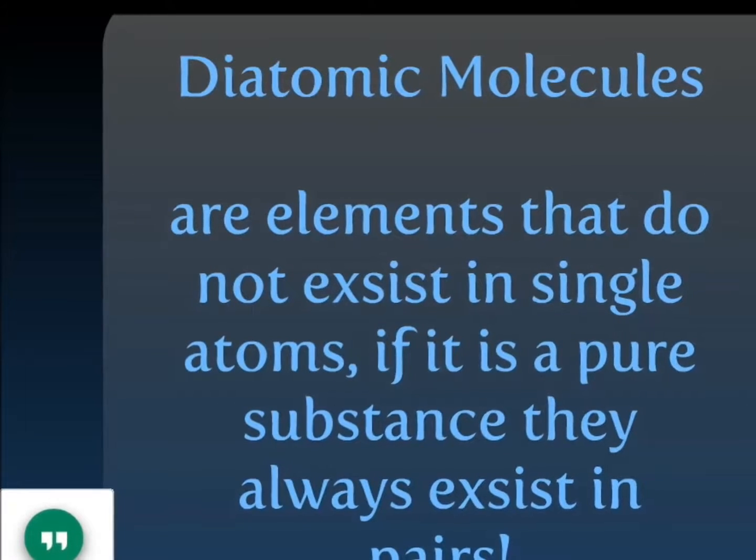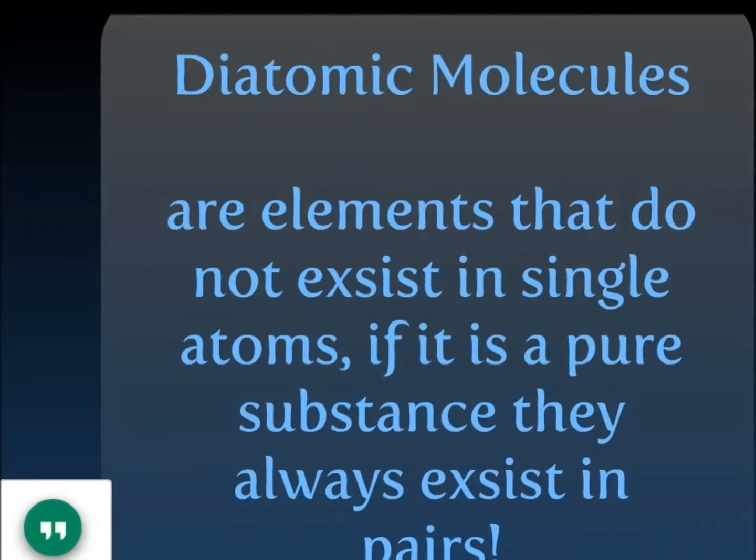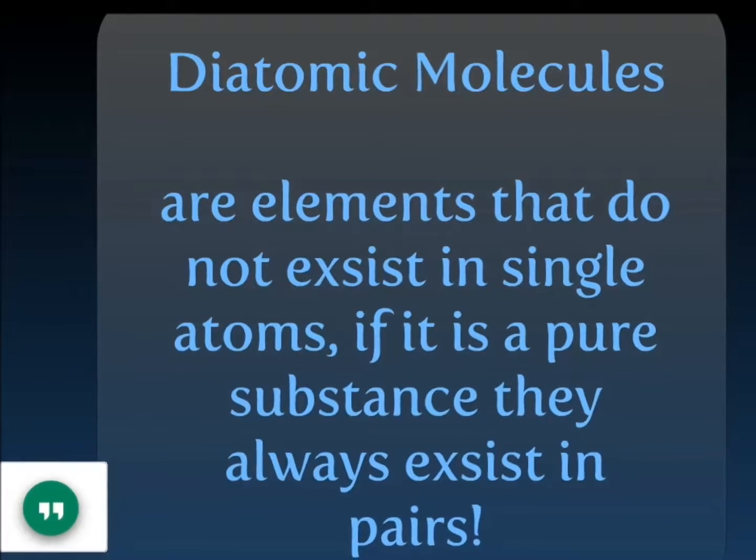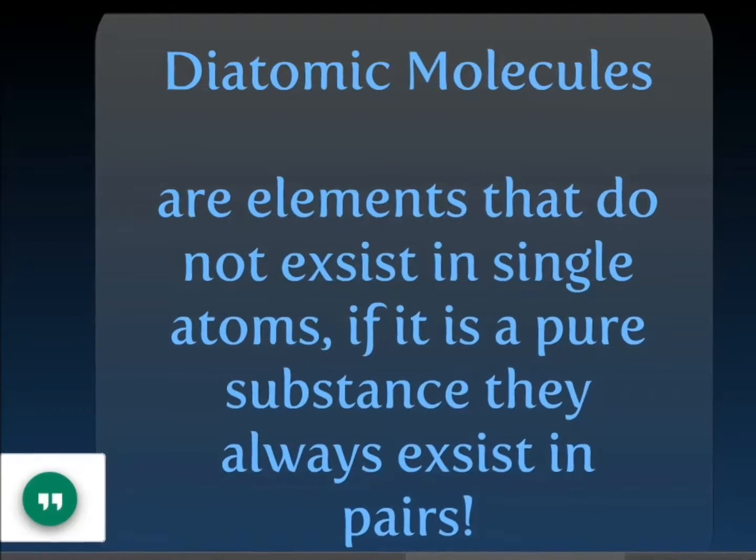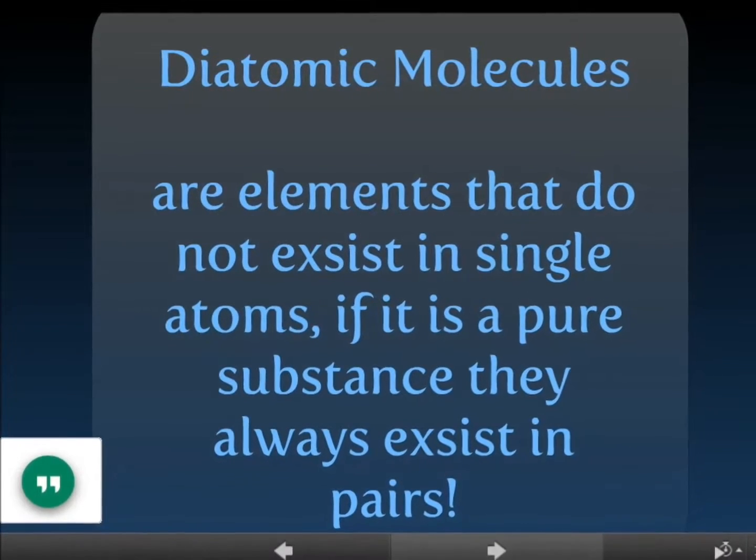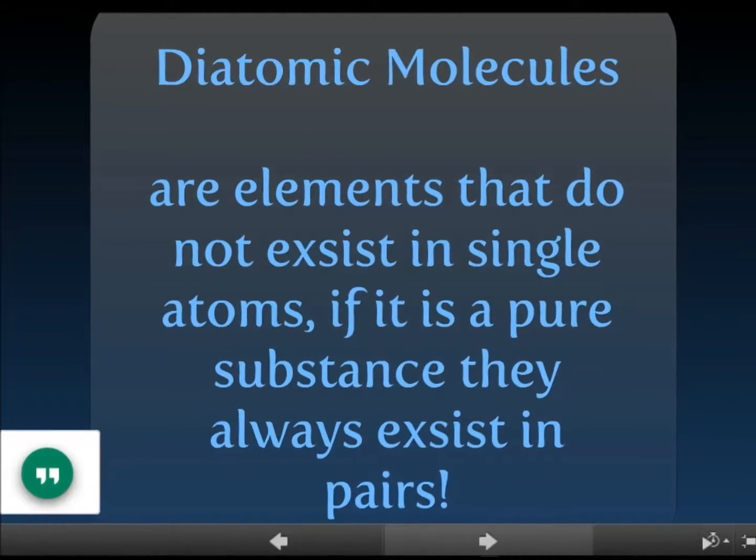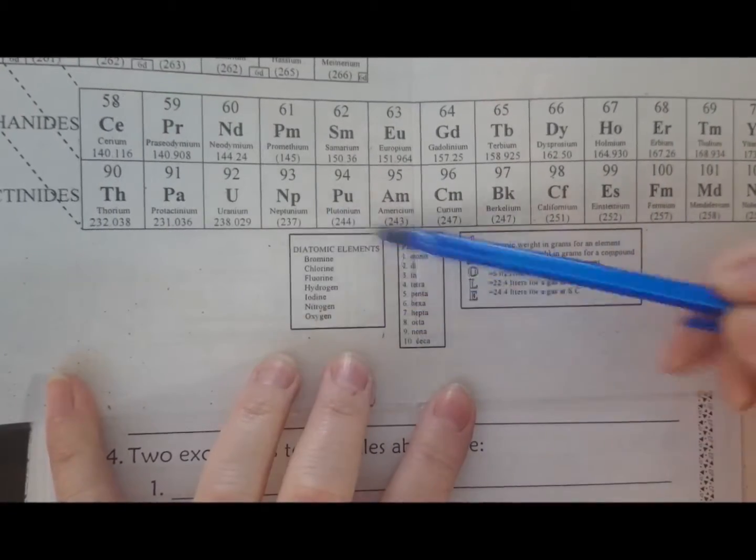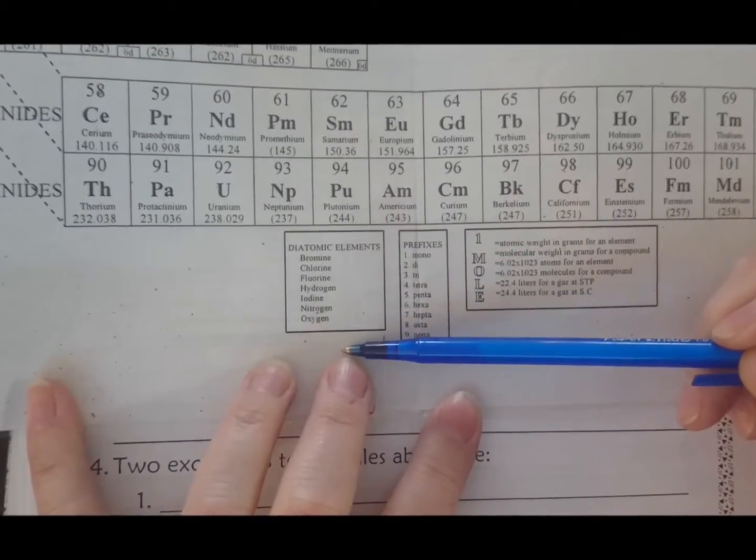Diatomic molecules - these are molecules that are going to exist in nature as partners, as pairs. Diatomic. If you find them in nature, they're never going to exist as single atoms. Here is our list: the diatomic elements are right next door.